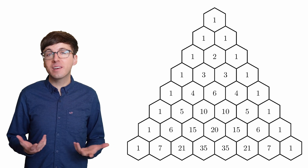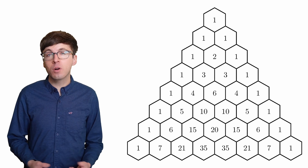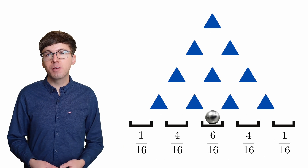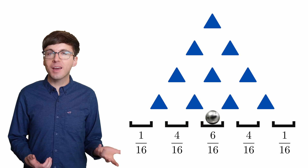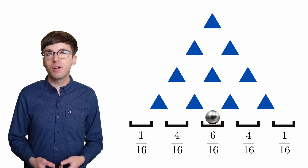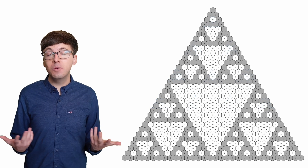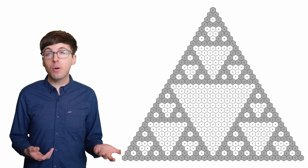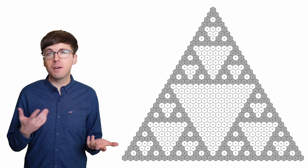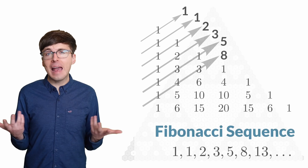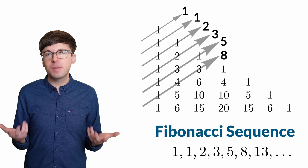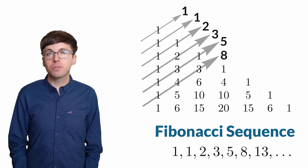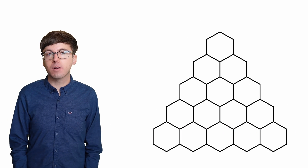Pascal's triangle predicts the most important probability theorem. It tells us how to multiply (x + y) to the 12th, and hidden within it are the powers of 2, a fractal, and the Fibonacci sequence. And it all starts from this simple pattern.